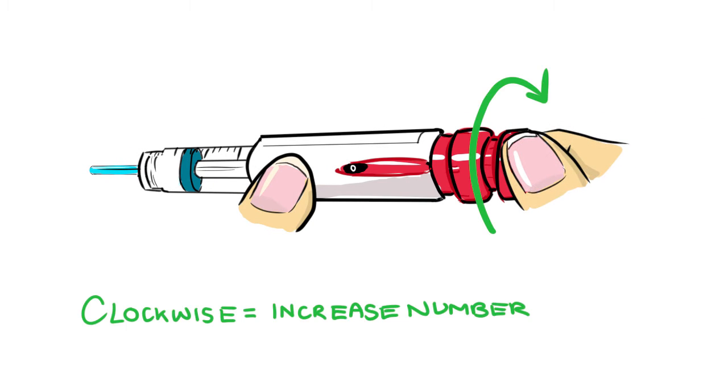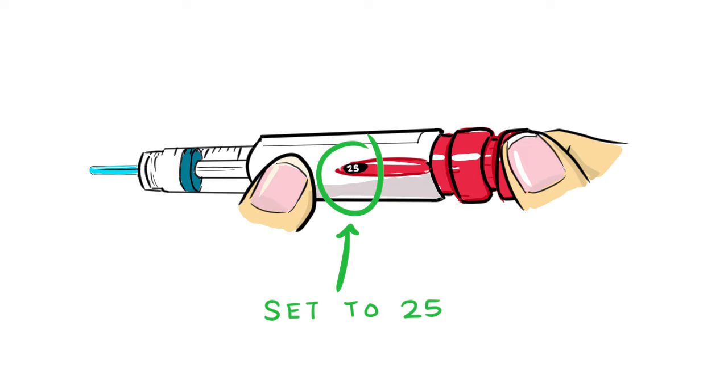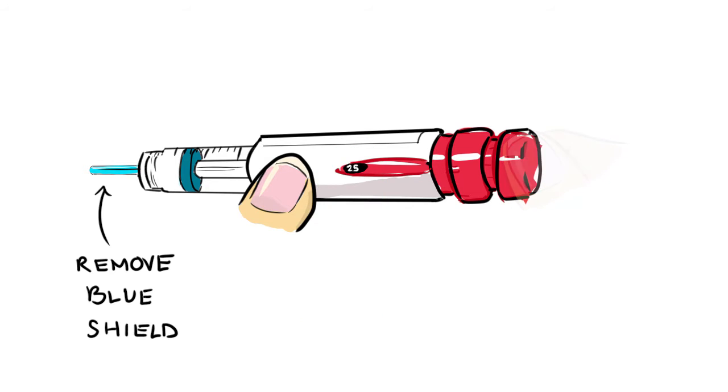If there is a large air bubble, turn the dose knob in a clockwise direction until the dose display is set to 25. Slowly remove the blue needle shield and throw it away. Be careful not to poke yourself with the needle.